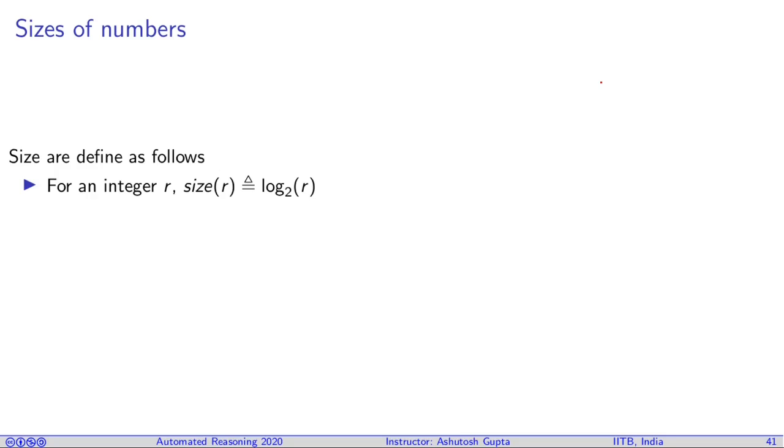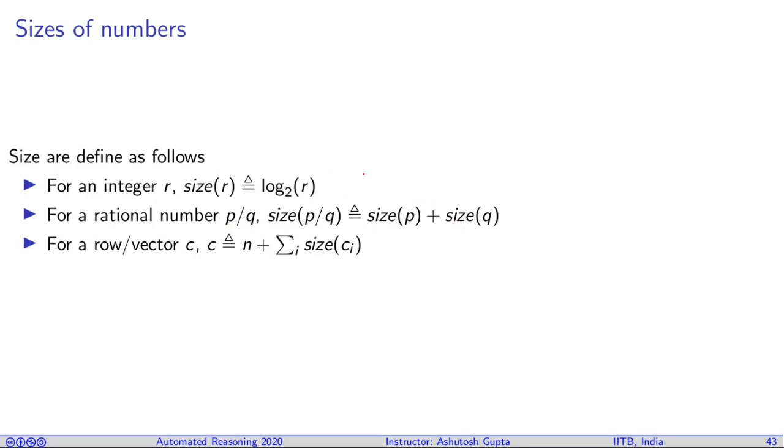Before understanding this method, we need to understand the sizes of polyhedra and the two important ideas in the sizes: the smallest polyhedron and the biggest polyhedron. If I give you an integer r, its size is log₂(r). For a rational number p/q, the size is size(p) + size(q). For a row vector c, c ∈ ℝⁿ, it's n plus the sum of the sizes. Extending this idea, you can define the size of matrix A.